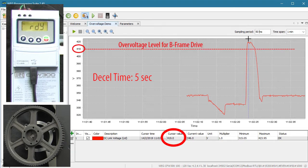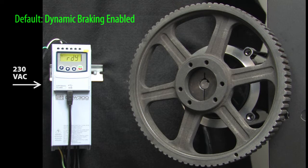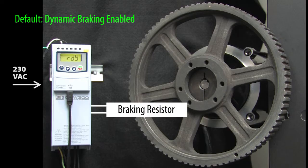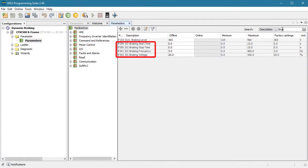Or we can use the dynamic braking feature built into this B-frame drive. And guess what, dynamic braking is enabled by default in this drive. You just add a resistor and you're done. If I search WPS for braking, we see there's a bunch of DC braking parameters. That's a different video. But there's only one dynamic braking parameter. And look, it's preset at 365 volts.